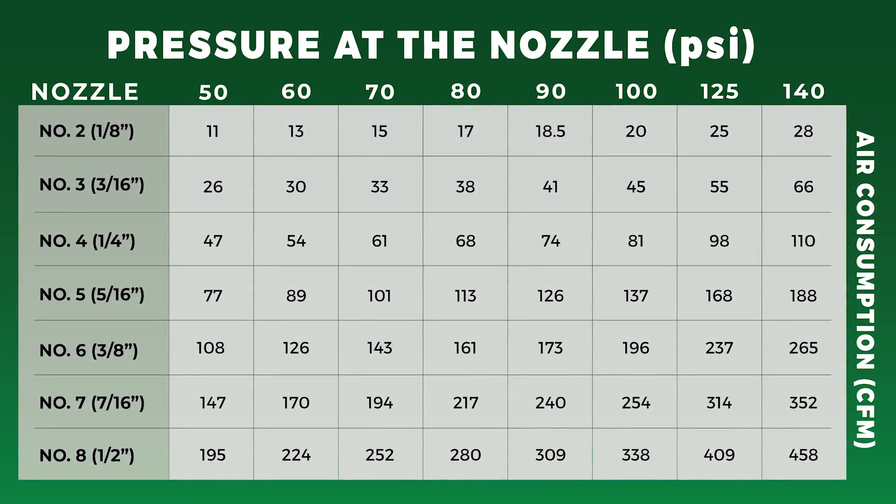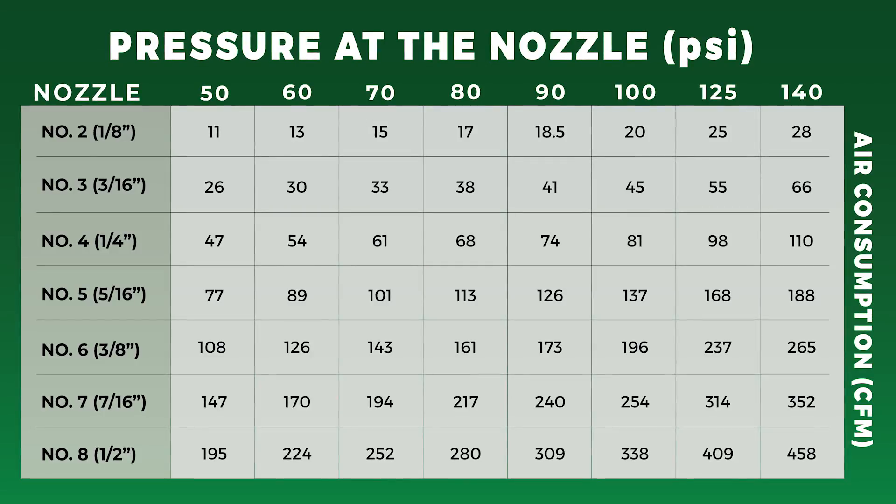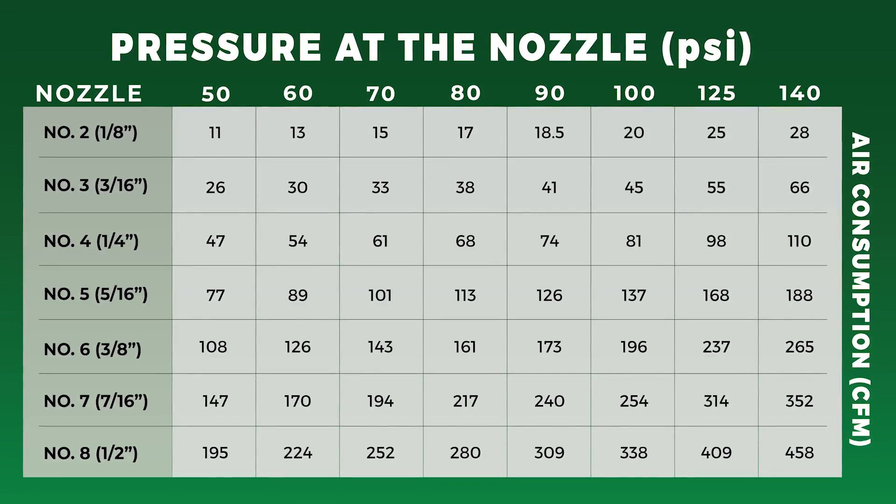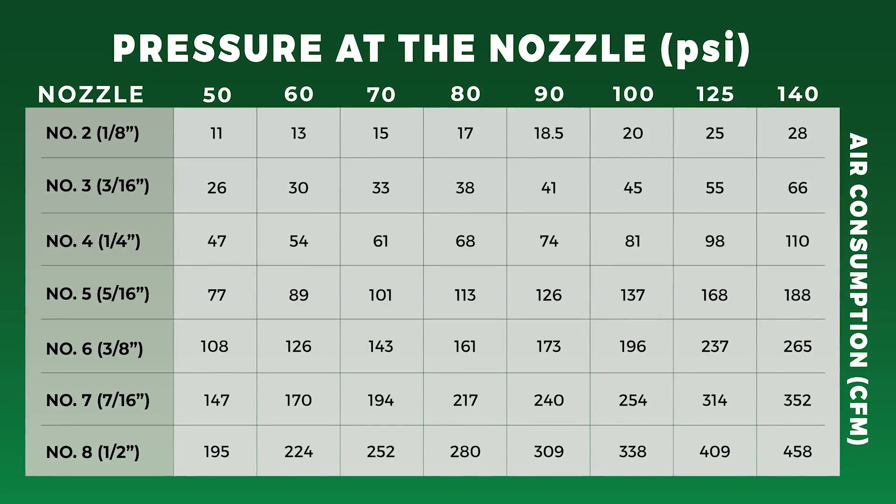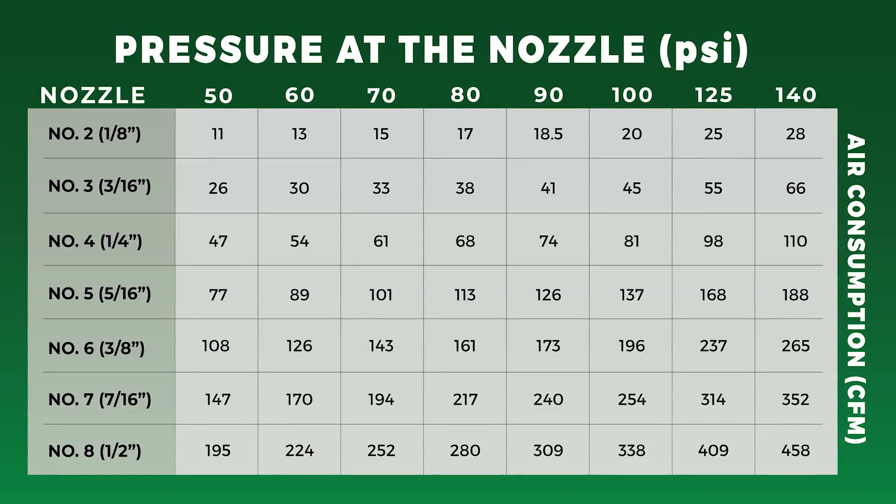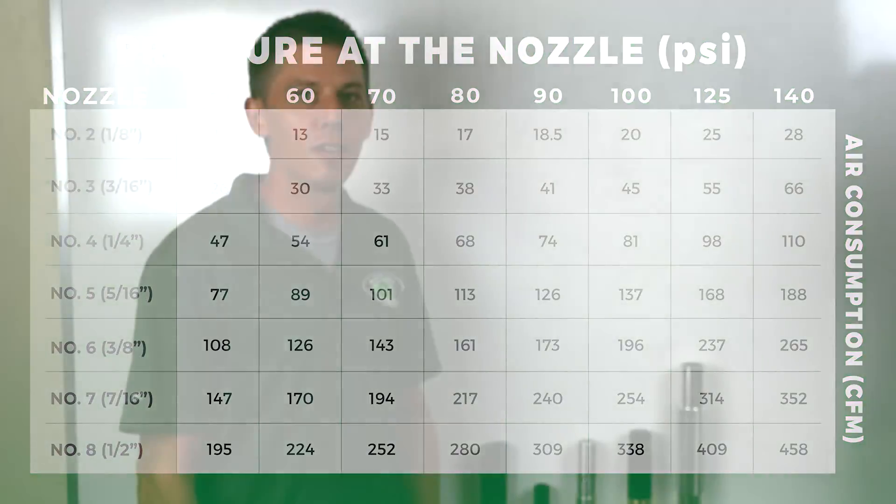But if you look at that consumption chart, in order to run at a max pressure, like say to get a hundred psi with the number five, you need a certain amount of air volume. That'd be your compressor. So it's just very important to make note of what size compressor you have before you even start selecting a nozzle.